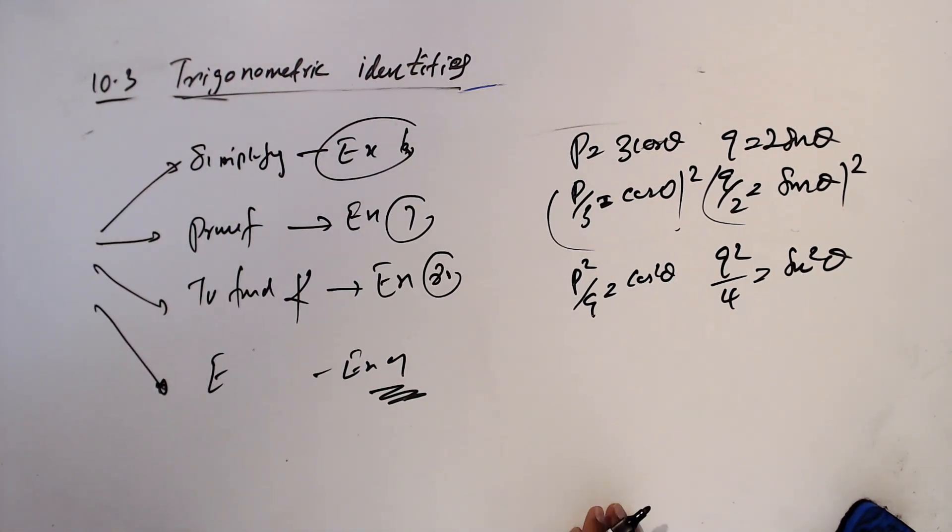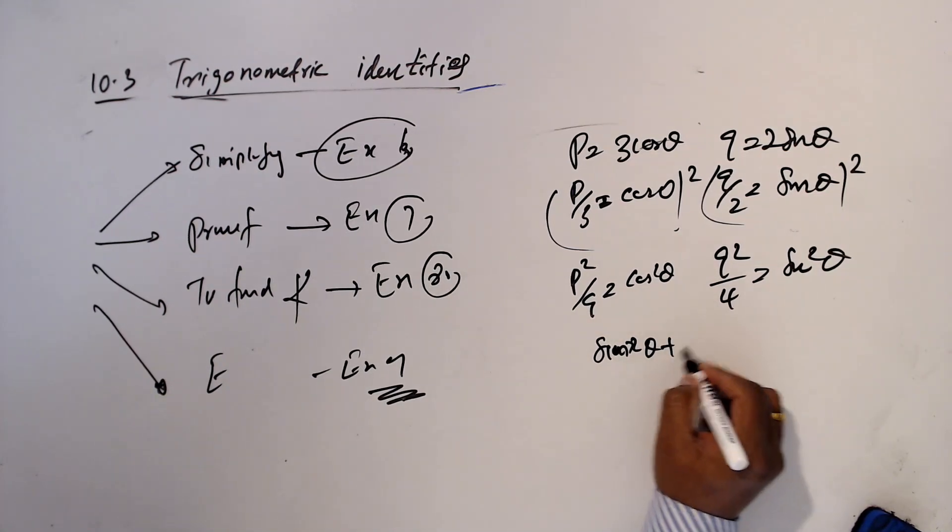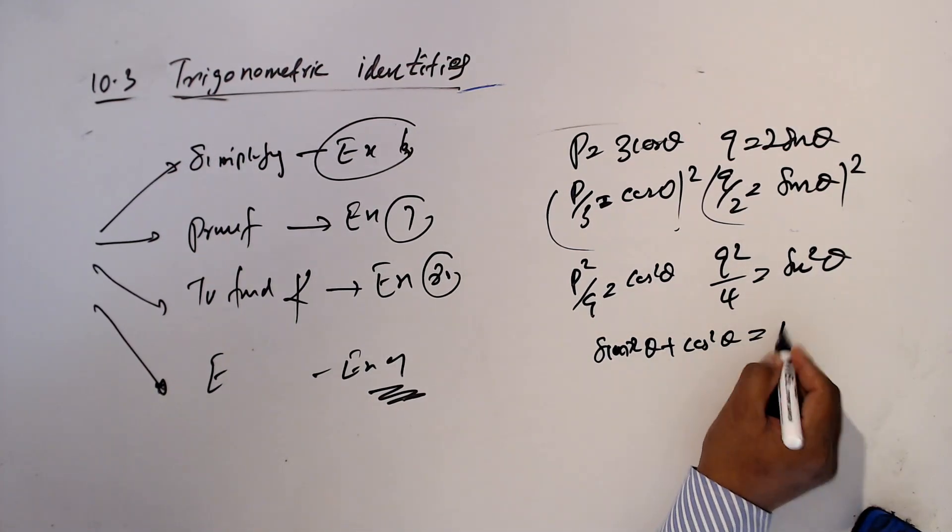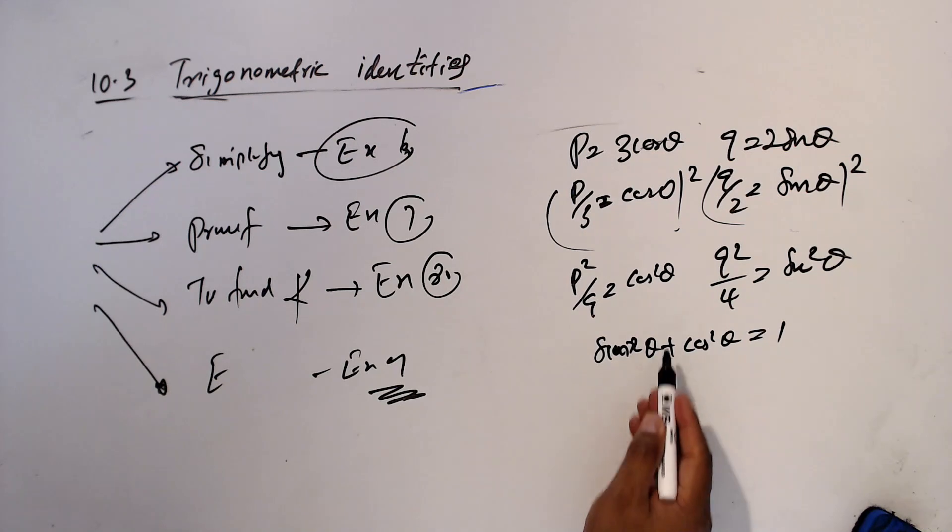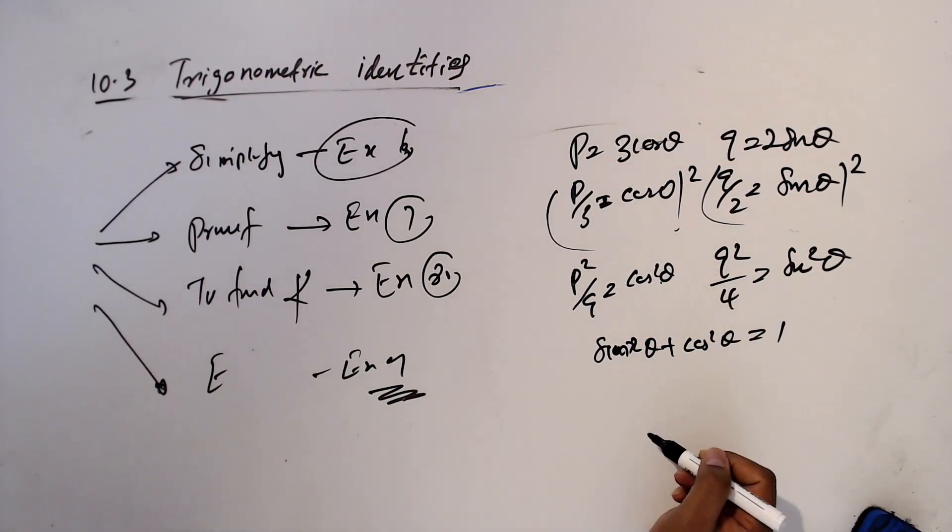Now what you can do? Use the identity. You know that sin square theta plus cos square theta equal 1. Why I take theta? Because this is theta. If this is alpha, I am taking alpha. If this is 2 alpha, I am taking 2 alpha.